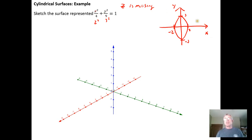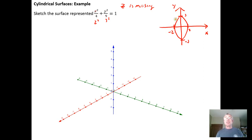A cylinder is defined to be a plane curve — which I have here, I have a curve and ellipse in the xy plane — and then the set of all lines that are parallel to a given line that contains this curve.